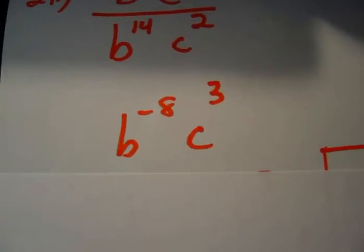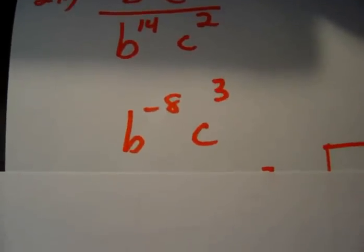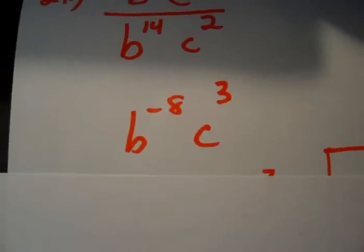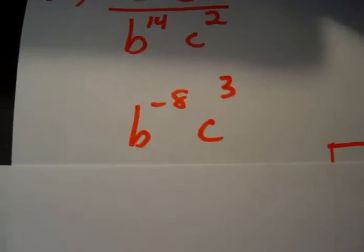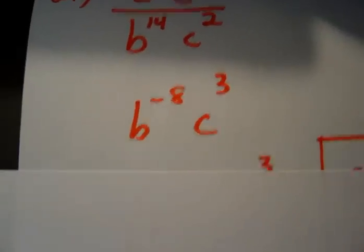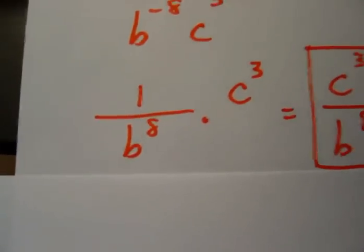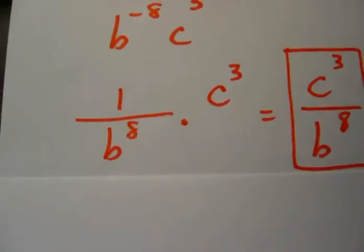This is good, but we're not finished because we cannot leave a negative exponent in an answer. That would be like having bad grammar in English. So we're going to use the inverse. The inverse of b to the negative 8th is 1 over b to the 8th. So here we go. 1 divided by b to the 8th times c to the 3rd power.